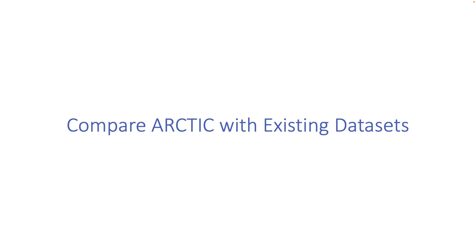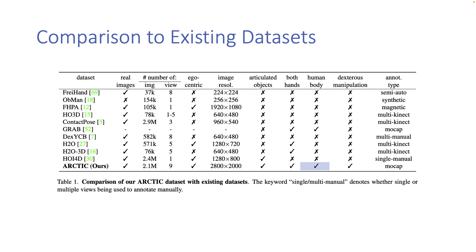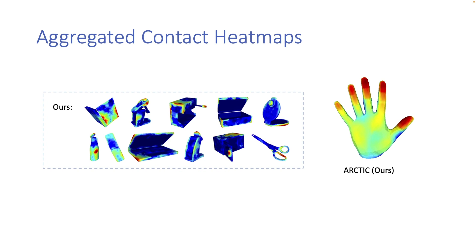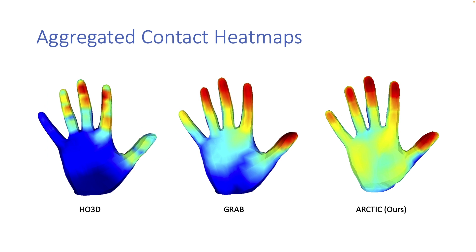We compare Arctic with existing hand object datasets. Our dataset is the first to capture the full human body, both hands, and articulated objects. It focuses on highly dexterous motion. Hand poses in Arctic are a lot more diverse than those in other datasets. We show a T-SNE plot of hand poses in terms of 3D joints. Arctic has more diverse contact regions than others, where hotter regions represent a higher chance of being in contact.